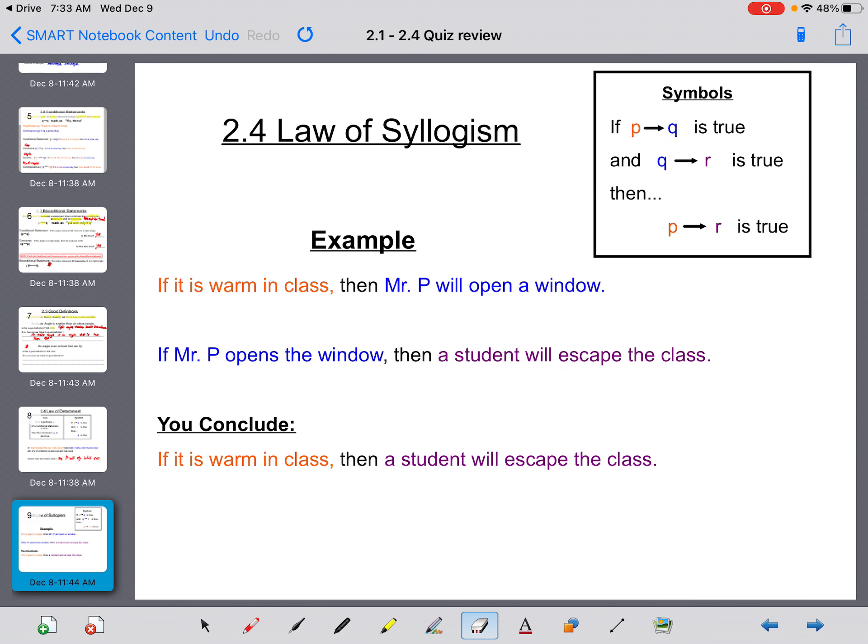The law of syllogism. If P then Q is true, and Q then R is true, then P then R is true. If it is warm in class, then Mr. P will open a window. If Mr. P opens the window, then a student will escape the class. You conclude: if it is warm in class, then a student will escape the class. So make sure you fill this one in.